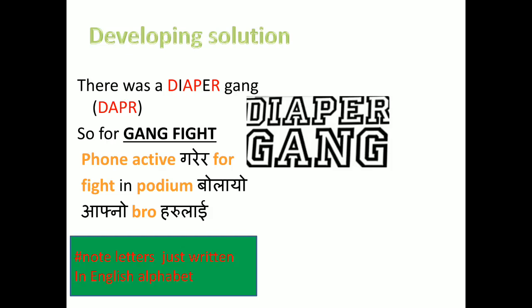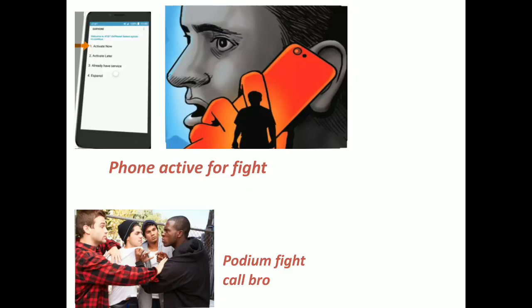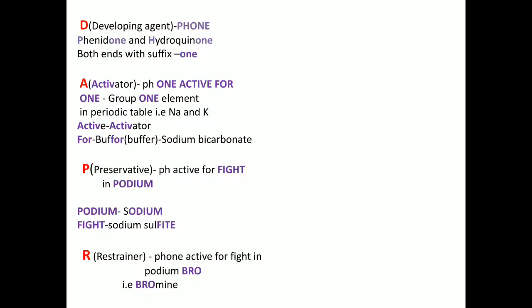This diaper gang, for a gang fight, phones, activates, and calls for a fight in podium — he calls his bro. Note the letters: phone, active, for, fight, in, podium, calls, his, bro. So D-A-P-R: D stands for developing agent, A stands for activator — do not confuse activator with acidifier — P stands for preservative, and R stands for restrainer.